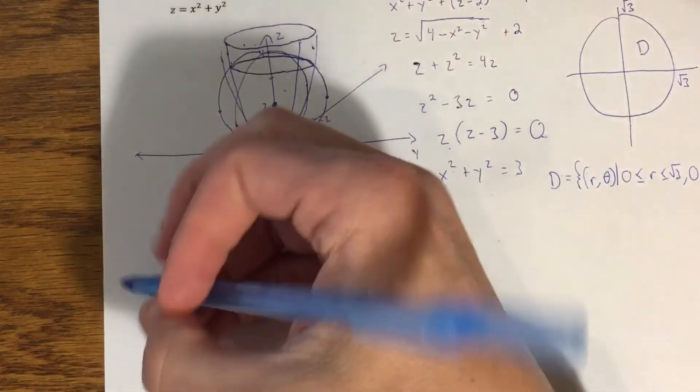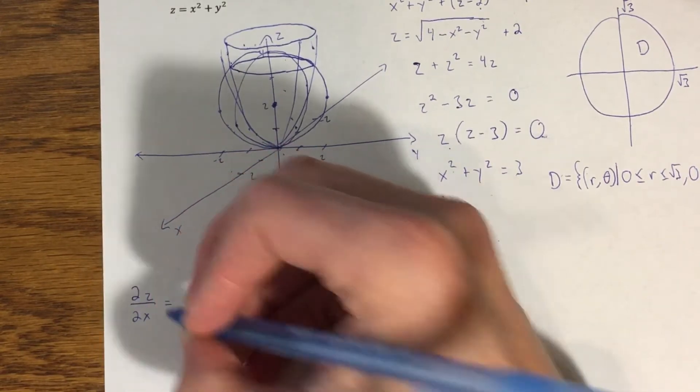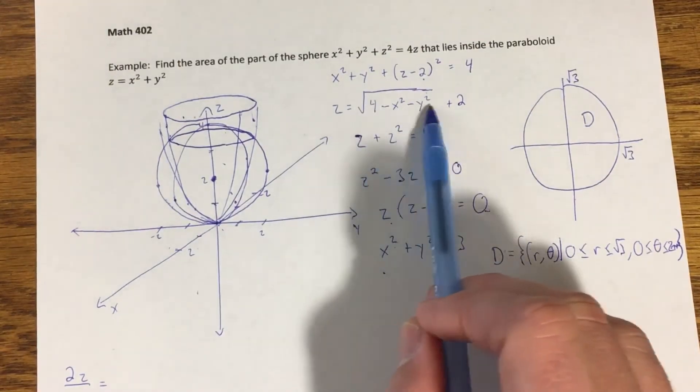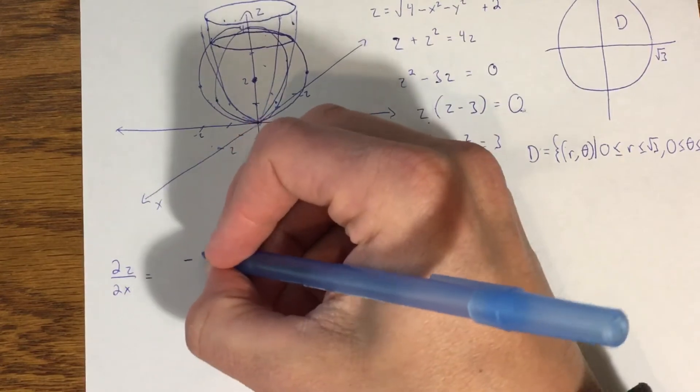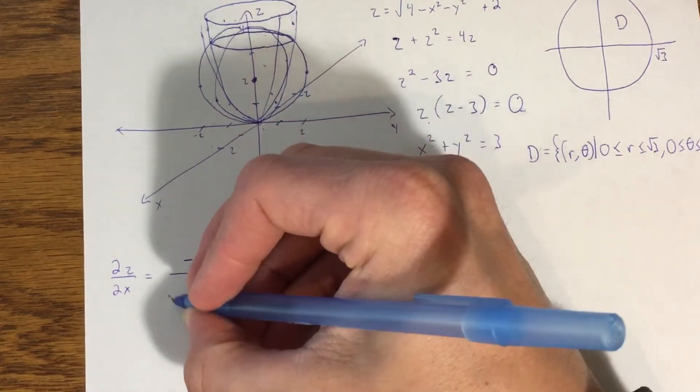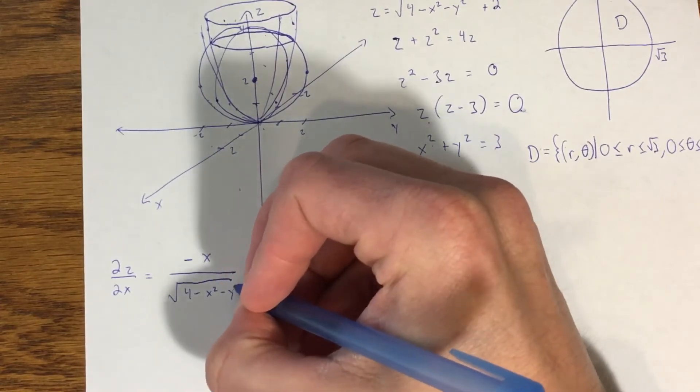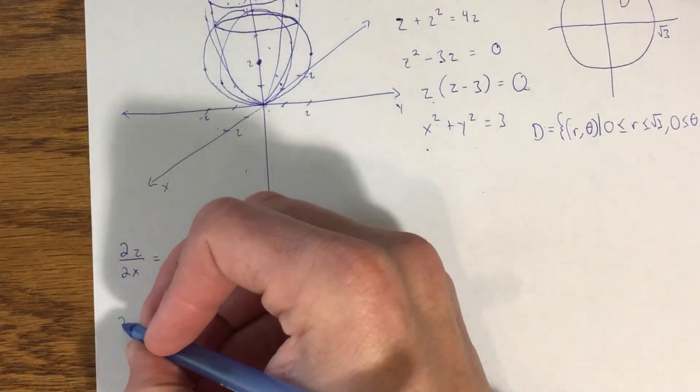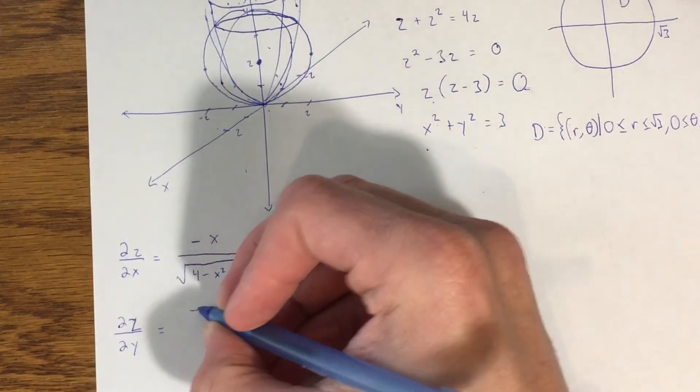The partial of z with respect to x, if we found the partial derivative of this with respect to x, it's going to be negative x over the square root of four minus x squared minus y squared. Partial of z with respect to y will be negative y over four minus x squared minus y squared.